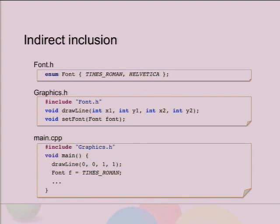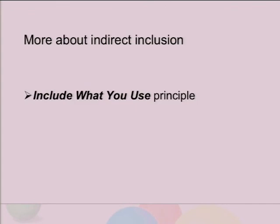To mitigate that, people invented the "include what you use" principle, where everything that is used in a file — in a source file or header file — has to have its declaration either present in the file or directly included. Of course, there are different camps: there is a camp that follows the include-what-you-use principle, and there is a camp that says fewer includes the better. We don't have a choice but to support both. And as with any general principle there are numerous exceptions, so you cannot really directly include every header file that defines things needed for the code.